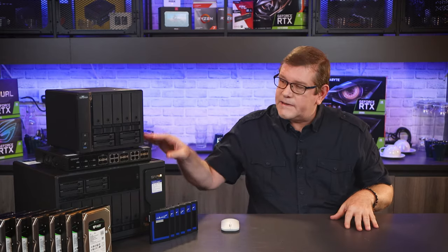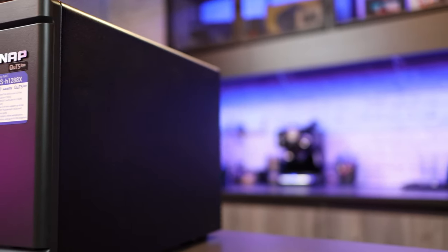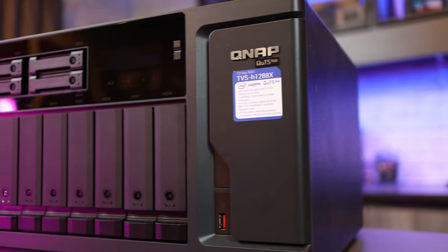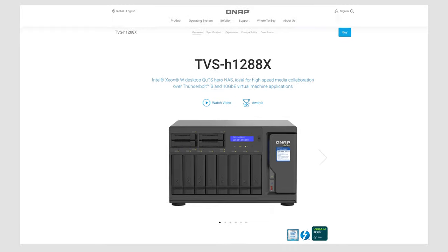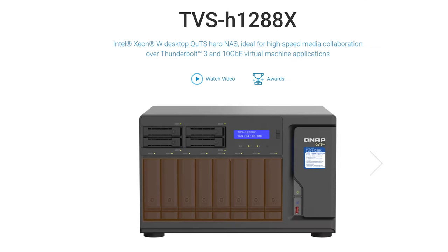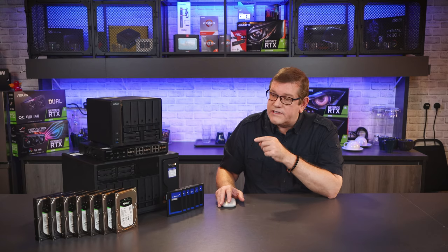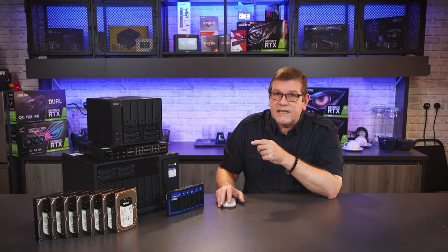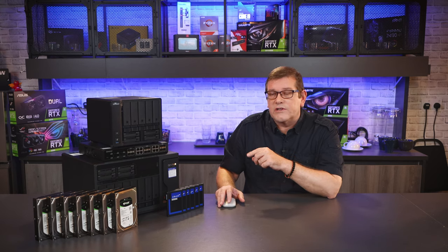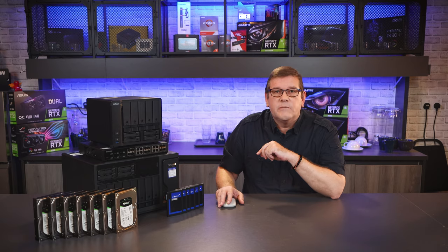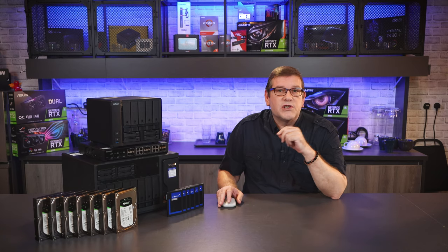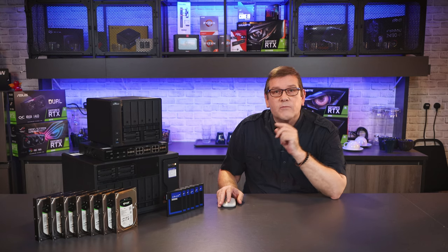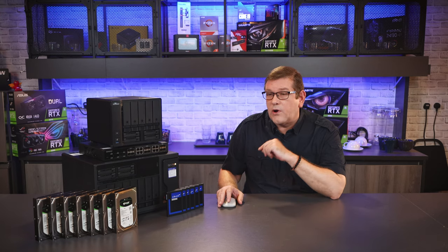Today I want to take a closer look at this bigger NAS from QNAP — the TVS-H1288X. This unit has 12 drive bays and supports three different types of media. First, there are eight 3.5-inch 6 gig SATA drive bays supporting a single drive capacity up to 20 terabytes — that's 160 terabytes of storage in the first eight bays alone. There are also four SSD bays where you can install high-capacity SSDs and use them for caching or tiered storage, and I'll have more on both caching and tiered storage in the second part of this video series.